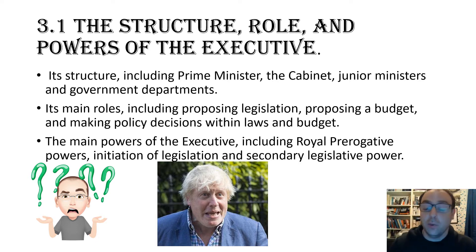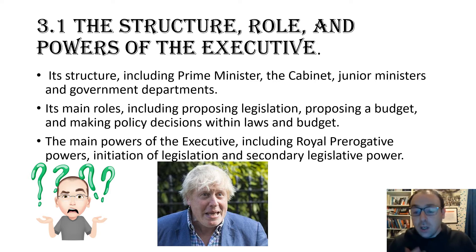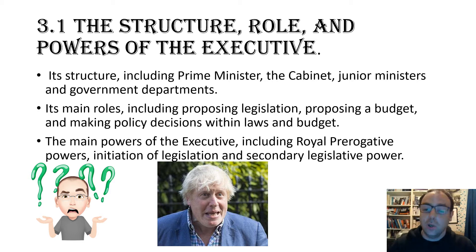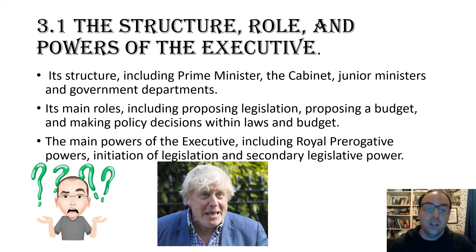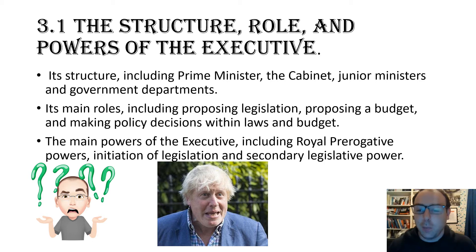This is from Component 2 of A-level politics, Edexcel, Section 3.1 — the structures, role and powers of the executive. This asks us to look at its structure, including the Prime Minister, the Cabinet, Junior Ministers and Government departments. The main roles, including proposing legislation, proposing a budget and making policy decisions within laws and budget. And then finally, the main powers of the executive, including royal prerogative powers, initiation of legislation and secondary legislative power.